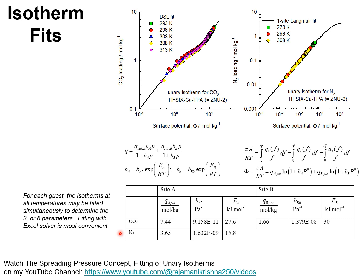I use the Occam's razor philosophy in choosing the proper model to use. This philosophy is based on the concept of not complicating things beyond necessity: if the simplest model works, use the simplest model; only increase the degree of complexity if the data demands it. Accordingly, I fit the nitrogen isotherms with a single-site Langmuir model and the CO2 isotherms with a dual-site Langmuir model. The parameters are presented in this table. For each guest, the isotherms at all temperatures are fitted simultaneously — three parameters for nitrogen and six parameters for CO2.